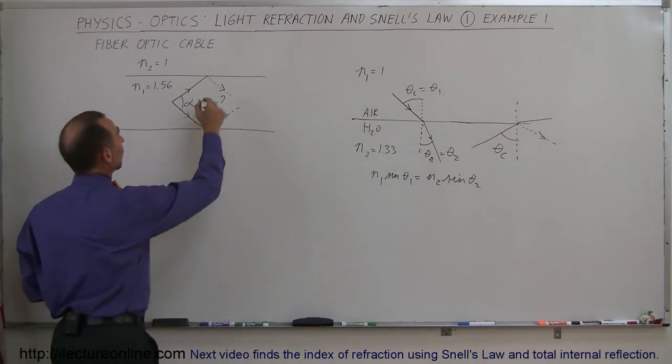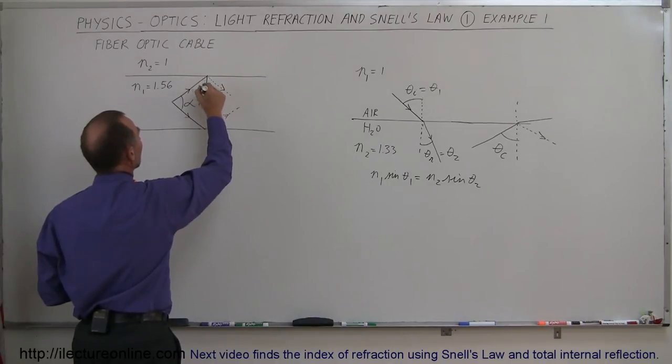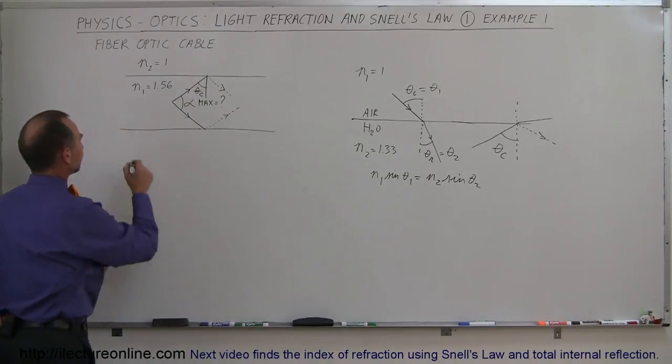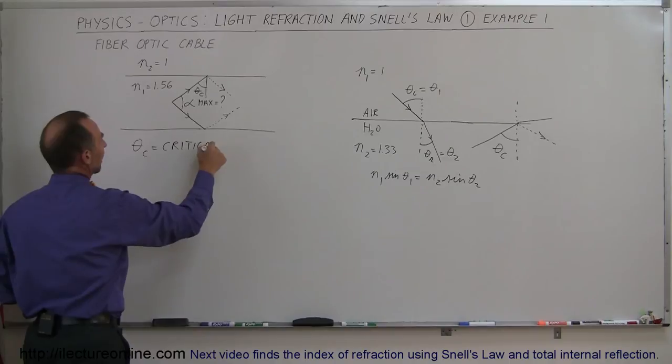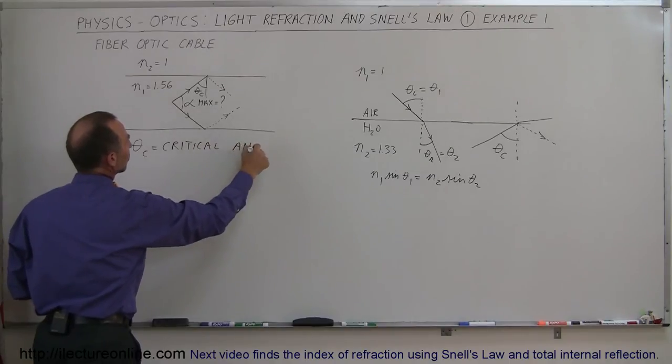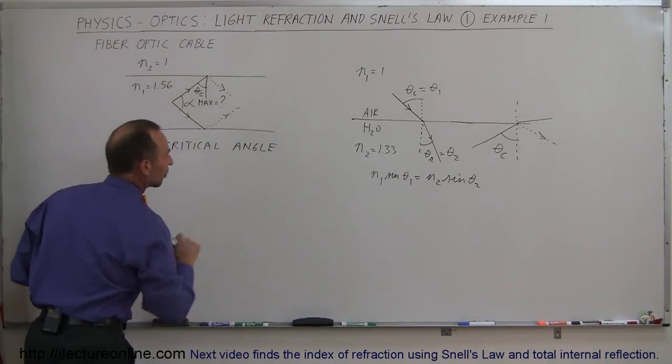The way to do that is to find out what the critical angle is right here. So this is called the critical angle. That's theta sub c, the critical angle. And the way we can find that critical angle is by using Snell's law. So we use the very same law.